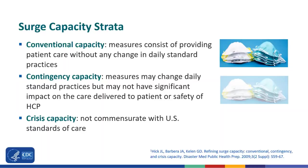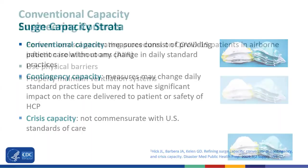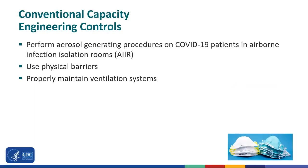Conventional capacity includes measures that do not cause any change in daily standard practices — things that should already be implemented in infection prevention and control practices. Contingency capacity includes measures that may change daily standard practices, but may not have a significant impact on the care delivered or the safety of healthcare personnel. Crisis capacity measures are not commensurate with U.S. standards of care. Engineering controls within conventional capacity include performing aerosol-generating procedures on COVID-19 patients in airborne infection isolation rooms (AIIRs), using physical barriers, and properly maintaining ventilation systems.